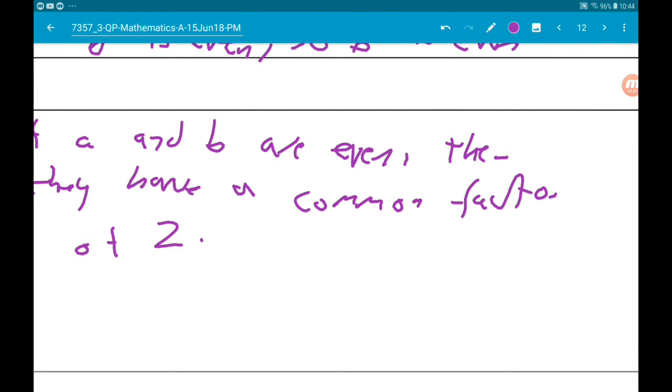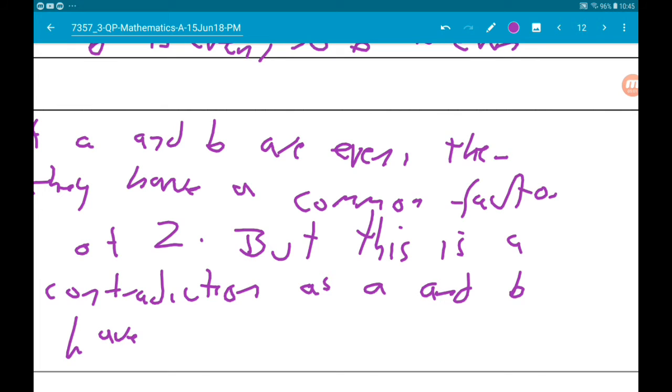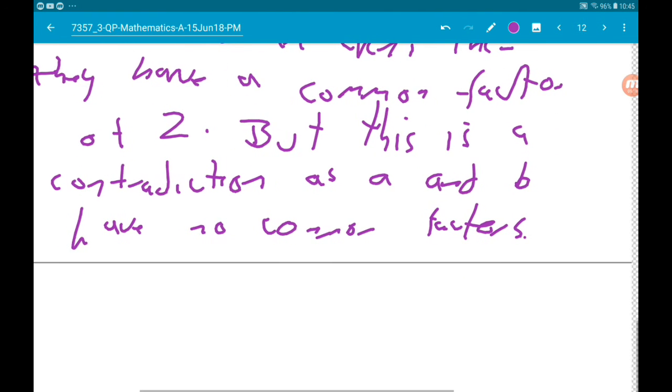Now this is a contradiction because we said a over b was a fraction with no common factors. But this is a contradiction as a and b have no common factors. Therefore, the cube root of 2 is irrational.